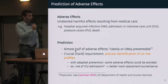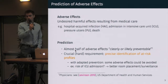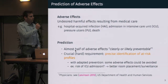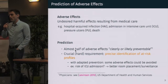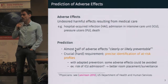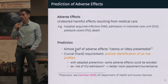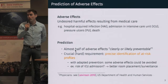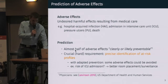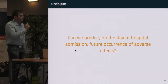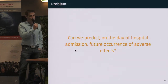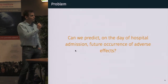However, for this to be possible, there is a crucial and hard requirement, which is to be able to precisely identify at-risk profiles. With such a precise identification, we could probably avoid some adverse effects. For instance, if we can predict that some person is at very high risk of ICU admission, then we can probably put them in a room which is closer to the ICU at admission. So the problem we are considering is: can we predict, on the day of hospital admission, the future occurrence of adverse effects?